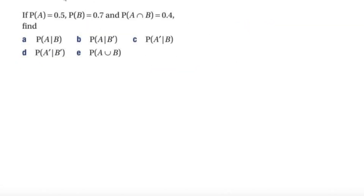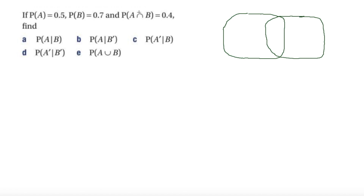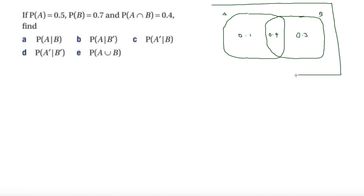The next question has similar problems. We'll draw a Venn diagram. In the middle, P(A and B) = 0.4. Then A-only is 0.5 minus 0.4 = 0.1, and B-only is 0.7 minus 0.4 = 0.3. On the outside, 1 minus everything inside gives 0.2.